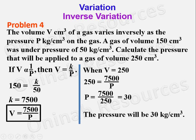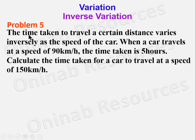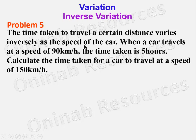We go to Problem 5. The time taken to travel a certain distance varies inversely as the speed of the car. When a car travels at 90 km/h, the time taken is 5 hours. We are not given letters, so we take t to represent time and s to represent speed. The time varies inversely as the speed, so t = k/s.